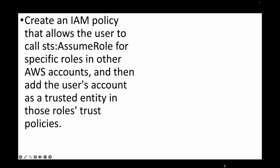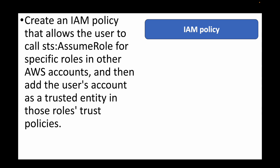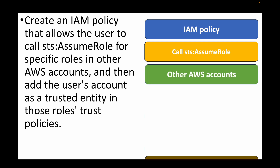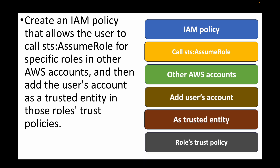The next question is: how do you allow an IAM user to assume multiple roles in different AWS accounts? For this, we create an IAM policy that allows the user to call AssumeRole — using STS — for specific roles in other AWS accounts. We then add the user's account as a trusted entity in each role's trust policy. This allows the user to assume the role, receive temporary credentials, log into other AWS accounts, and work with those accounts. That's how we allow a user to work across multiple AWS accounts using IAM roles.